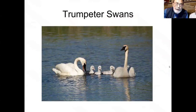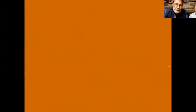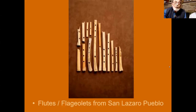Trumpeter swans are another bird whose presence far east of their current range was indicated by finding their bones in an archaeological site in Pennsylvania. The long bones in the middle include an ulna from a snow goose and one from a sandhill crane — both have been shortened from their original live length and turned into flutes. The other bones are also bird bones, all from San Lazaro Pueblo in New Mexico.